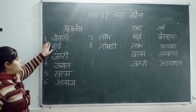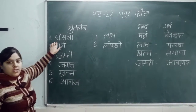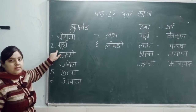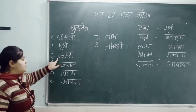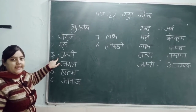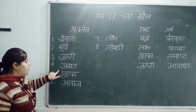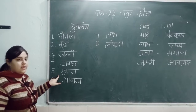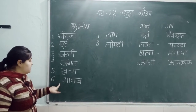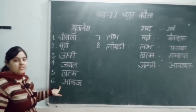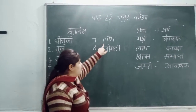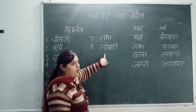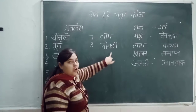First Shukle is Ghonsla. Second is Murk. Third is Januri. Fourth is Jungle. Fifth is Khatam. Sixth is Avaj. Next is Lap. And last is Longuri.